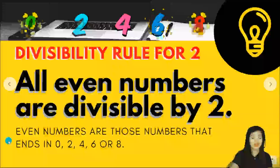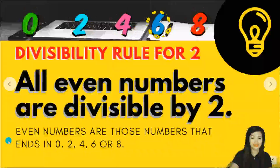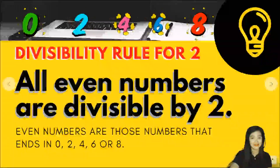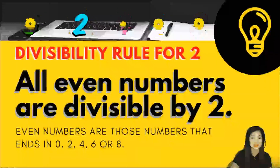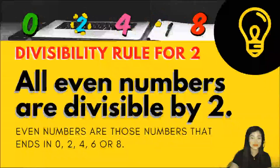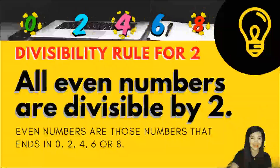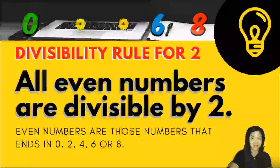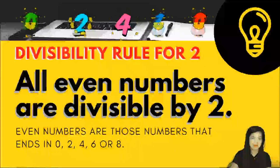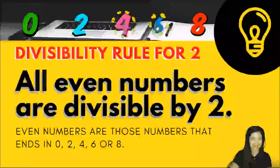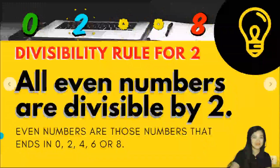All even numbers are divisible by 2. What are even numbers? Even numbers are those numbers that end with 0, 2, 4, 6, and 8. Let's have some examples.